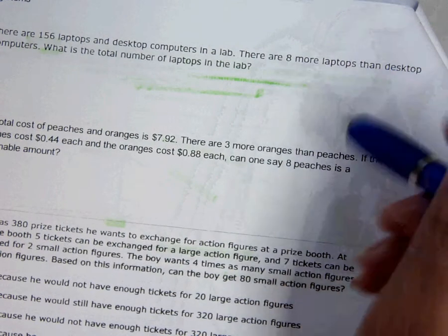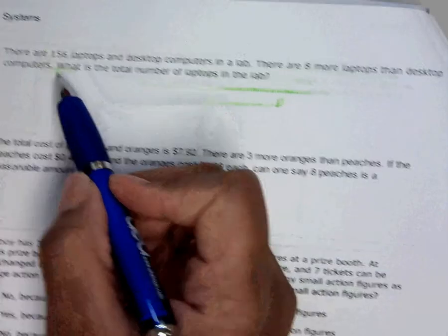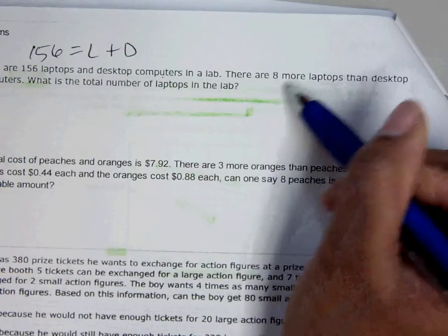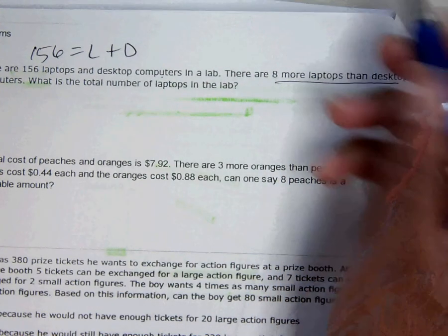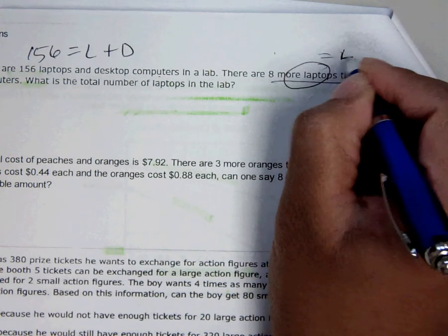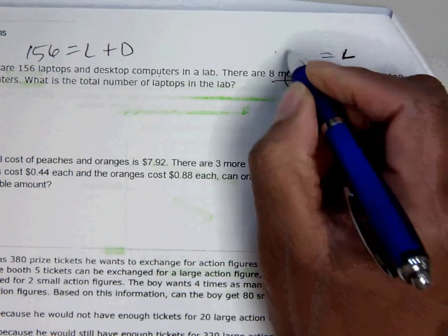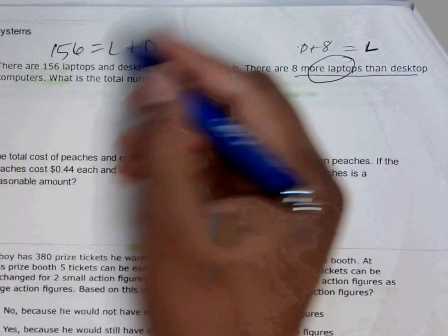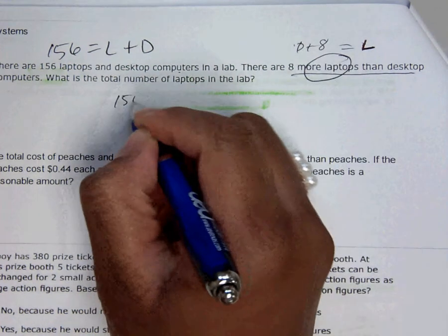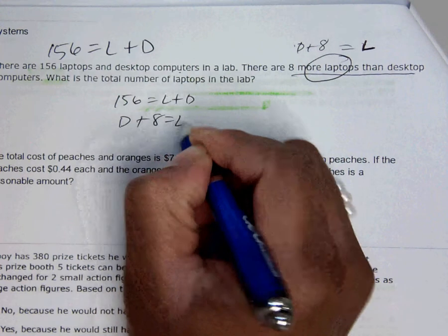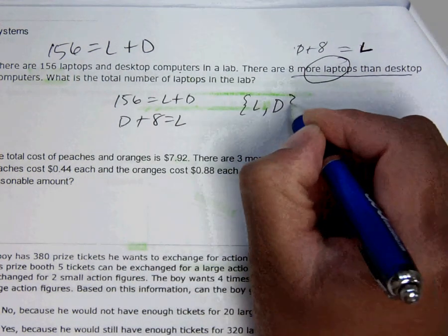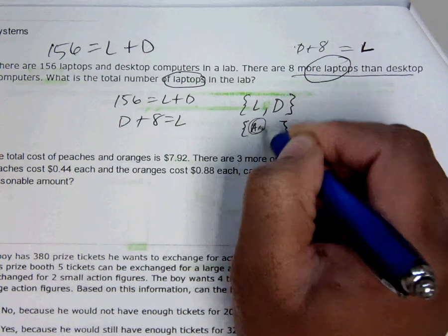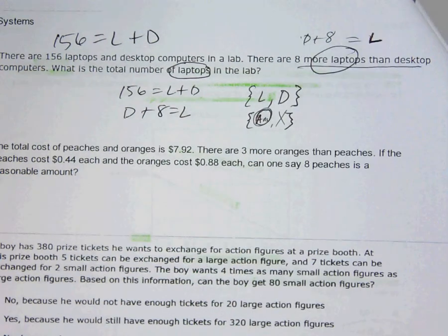I am going to do this one and then on the next video do the rest. There are 156 laptops and computers, so you should have 156 equals L plus D. Now this part, there are eight more laptops than desktops. We talked about that in class. The more laptops, that's what you set it equal to, because you have more of those. You have less desktops, so you need to add that to the eight. It's the outside information equals the inside information. Now you have enough to put into menu 3, 2. So you put that in the calculator, and whichever number is in the L spot is the answer.